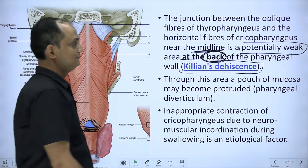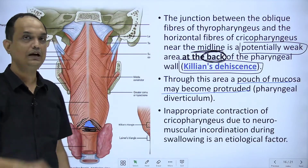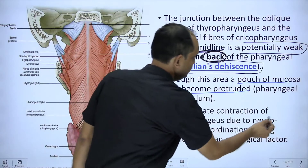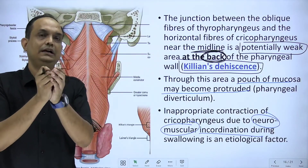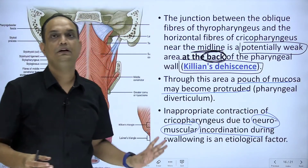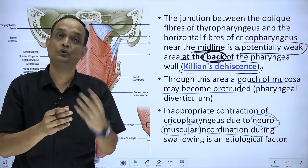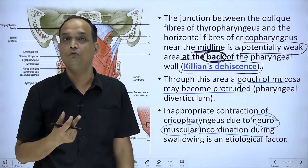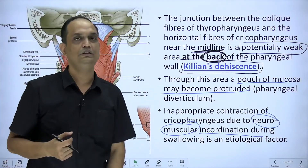Through this weak triangular area — Killian's dehiscence — the mucosa may protrude to form a pharyngeal diverticulum. The cause of this protrusion is inappropriate contraction of the cricopharyngeus due to neuromuscular incoordination. Normally, cricopharyngeus relaxes when thyropharyngeus contracts so food can pass down. But if both contract simultaneously due to incoordination, intrapharyngeal pressure rises and mucosa protrudes through this unsupported gap, which lacks any overlapping muscular support.